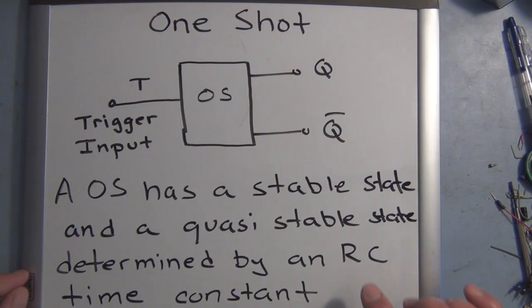That time is determined by an RC time constant. So it'll switch to that position once an input is triggered. It has a trigger input that changes the state from the normal output condition to an opposite output condition that lasts for a specific period of time.